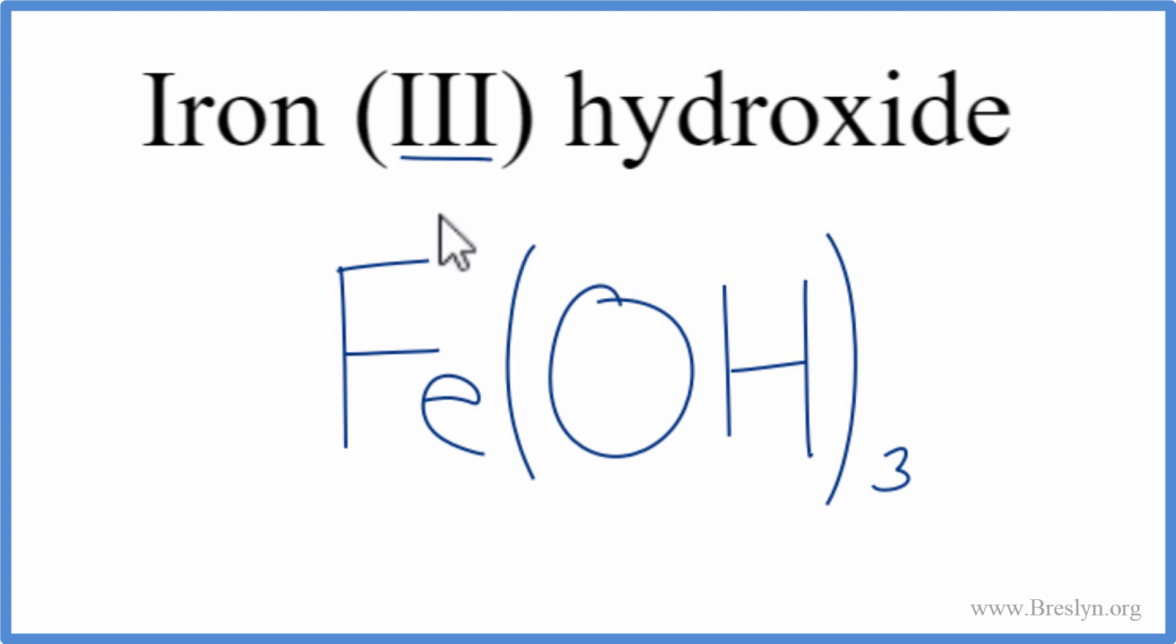So this is the formula for iron (III) hydroxide, but let's check our work to make sure. We said iron because of the Roman numeral, that was 3+. The hydroxide we said was 1-. I have three of these hydroxides, so 3 times 1-, that's 3-.